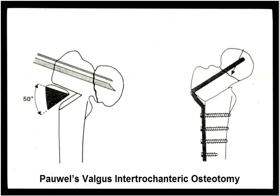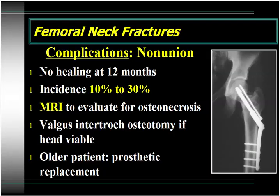The Pauwels valgus intertrochanteric osteotomy converts this vertically oriented fracture line in the femoral neck into a much more horizontal fracture line. You can then harness the physiologic forces across the hip joint to obtain interfragmentary compression across your femoral neck fracture to get effective union. This has shown success rates in the 80% to 90% range. Nonunion is defined as no healing at 12 months, with an incidence of 10% to 30%. If you have a nonunion, get an MRI to evaluate viability of the femoral head — if viable, do a valgus intertrochanteric osteotomy; if non-viable or in an older patient, prosthetic replacement would be the way to go.